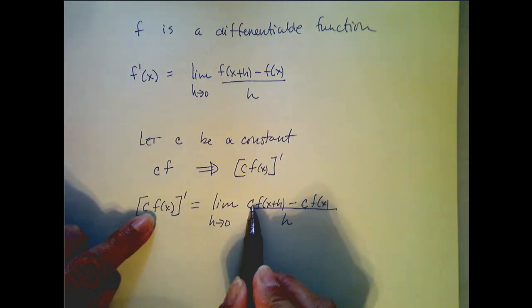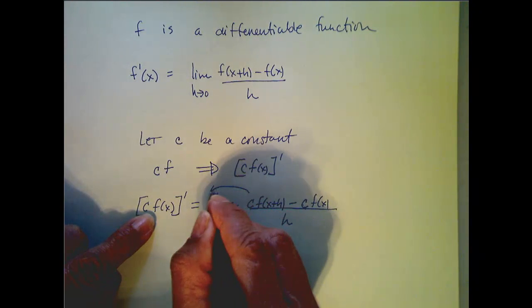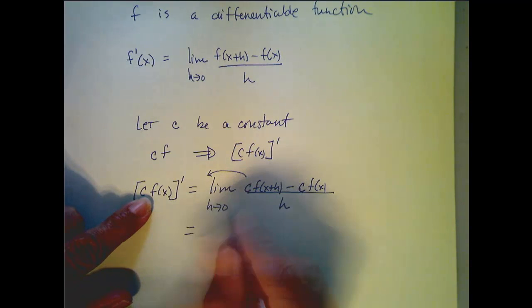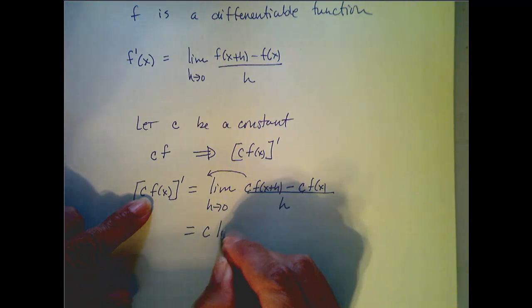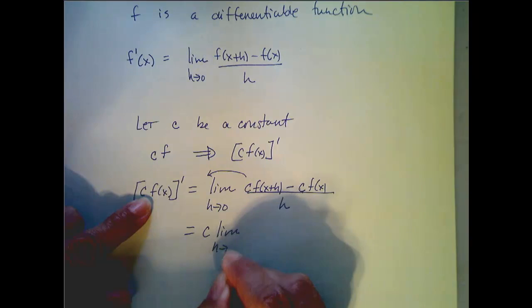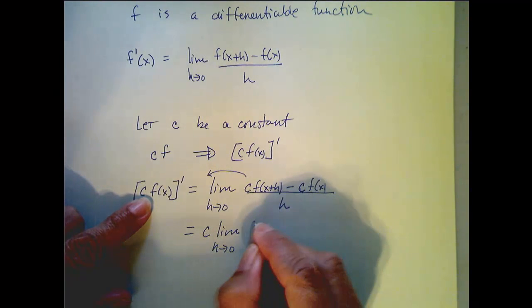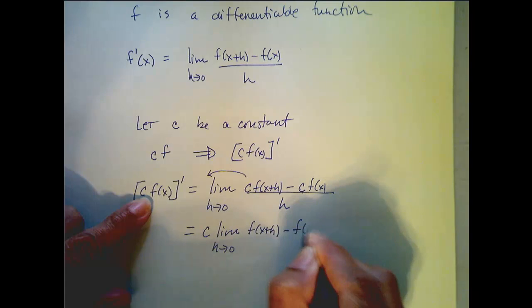And I realize I can factor out a c here, and further I can factor it all the way out from my limit laws. So, I have c times the limit as h goes to zero of f of x plus h minus f of x all over h.